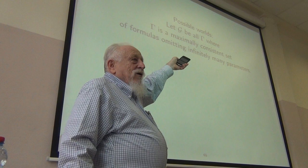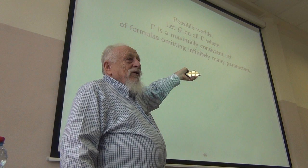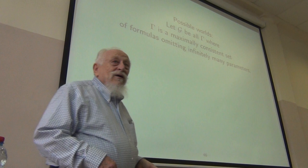So a possible world now is going to be a maximally consistent set of formulas in this logic, QK, that leaves out infinitely many parameters. That's it. So it's just like before, maximally consistent. It can involve parameters, but it has to omit infinitely many of them.